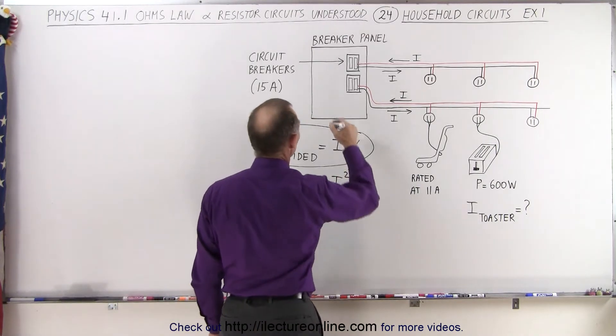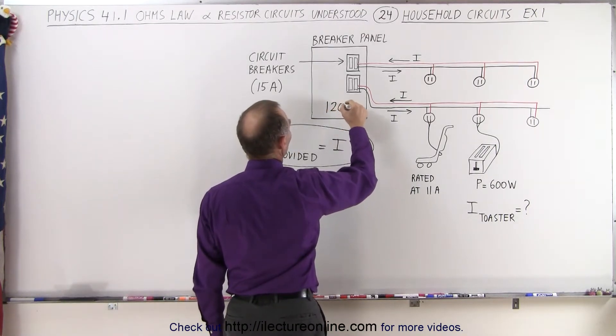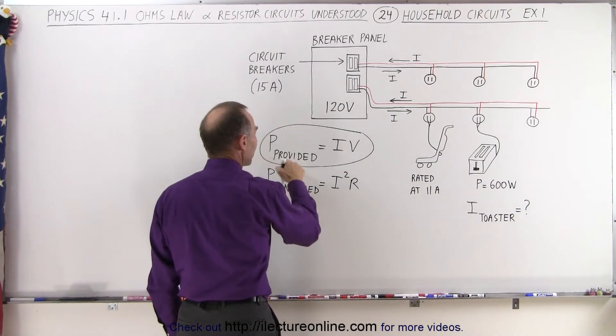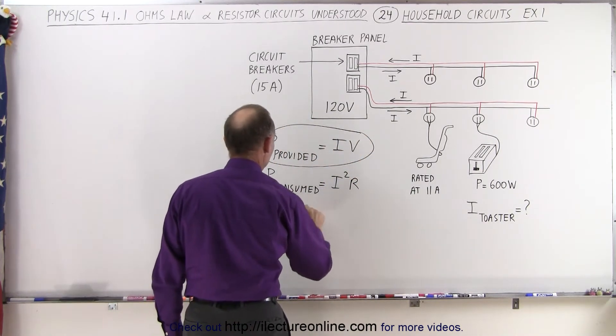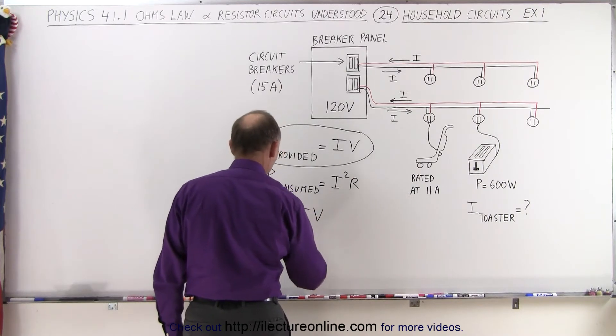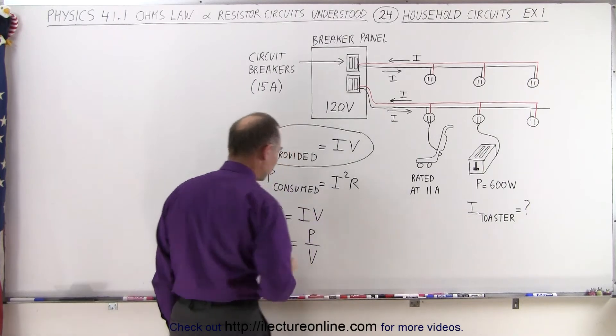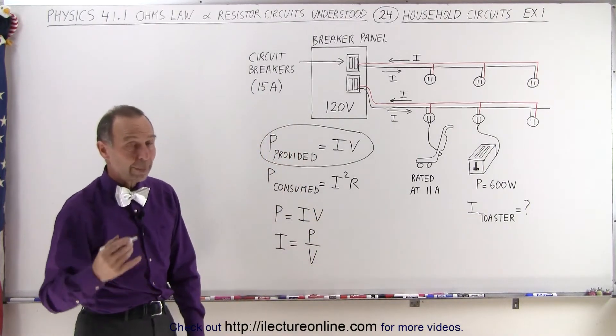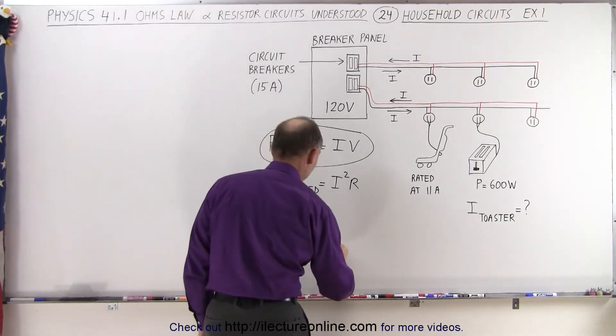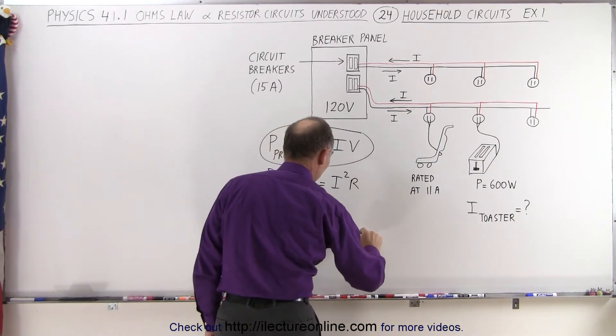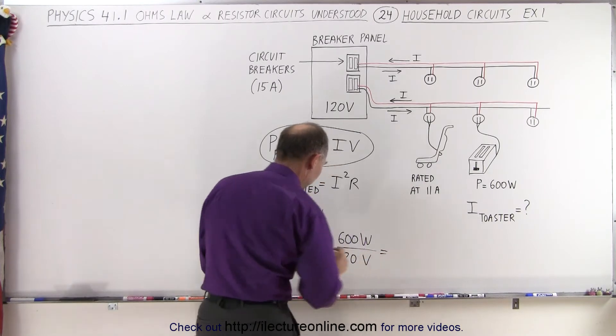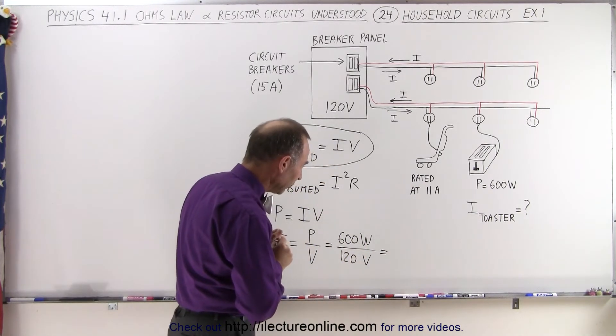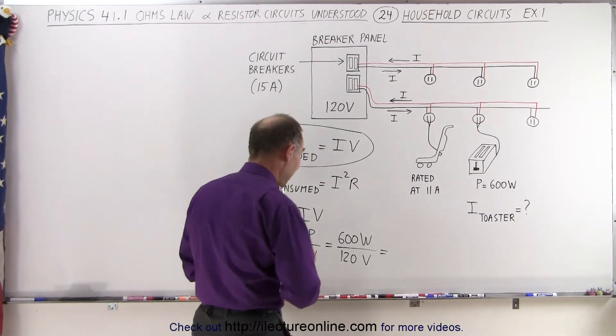Most household circuits work off 120 volts. So when we calculate the power provided for the toaster, we can say that the power is equal to I times V, or the current is equal to the power divided by the voltage. In this case we're told that the power for the toaster is 600 watts, so it'll be 600 watts divided by the voltage which is 120 volts. 600 watts divided by 120 volts is 5 amps.